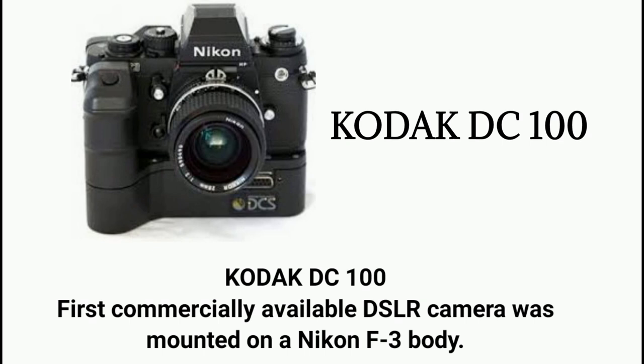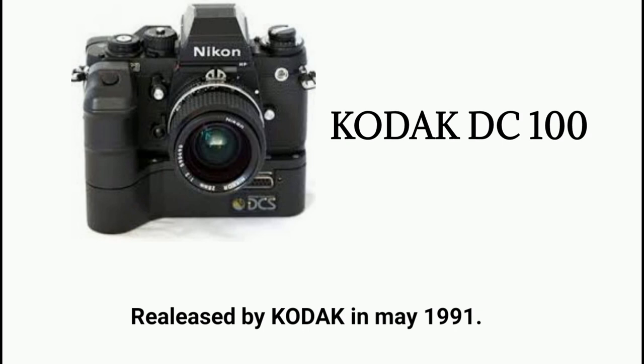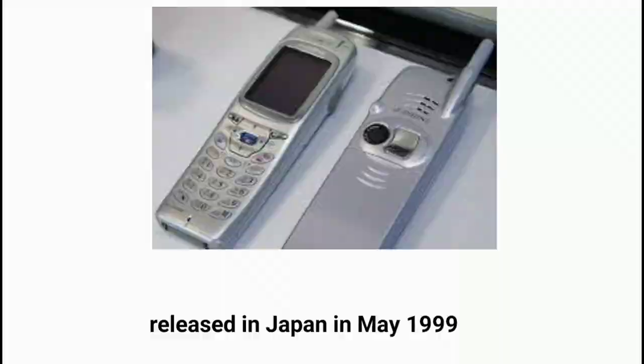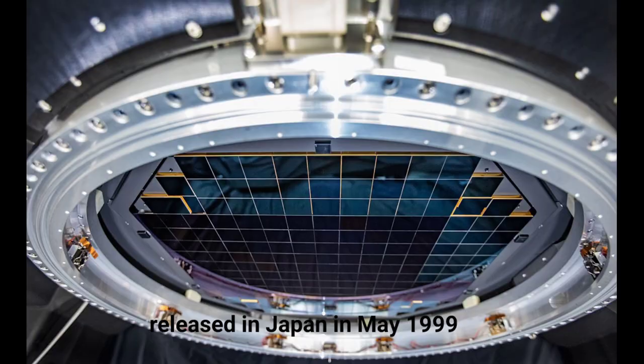The first commercial camera phone was the Kyocera Visual Phone VP210, released in Japan in May 1999. The Legacy Survey of Space and Time camera is the world's largest camera and will capture 3200 megapixel images.